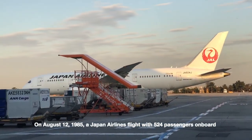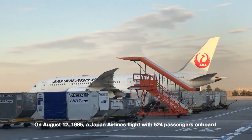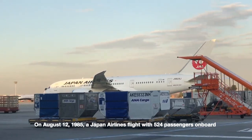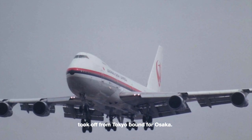On August 12, 1985, a Japan Airlines flight with 524 passengers on board took off from Tokyo, bound for Osaka.